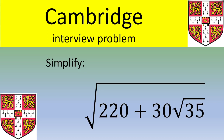Hello and welcome. In this video we have an exercise from a Cambridge interview problem. The exercise is to simplify the following expression: square root of 220 plus 30 times square root of 35. If you want to give it a try, please pause the video, otherwise let's see the solution.